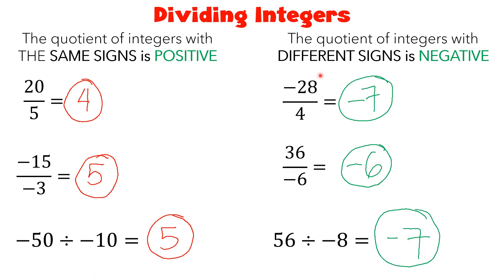Let us repeat the rules for dividing integers. If you are dividing two numbers with the same sign, your answer must be positive — whether they are both positive or both negative, your answer must be positive. While if you are dividing integers with different signs, your answer will automatically be negative. This rule for dividing integers is actually the same as multiplying integers — they have the same rules.